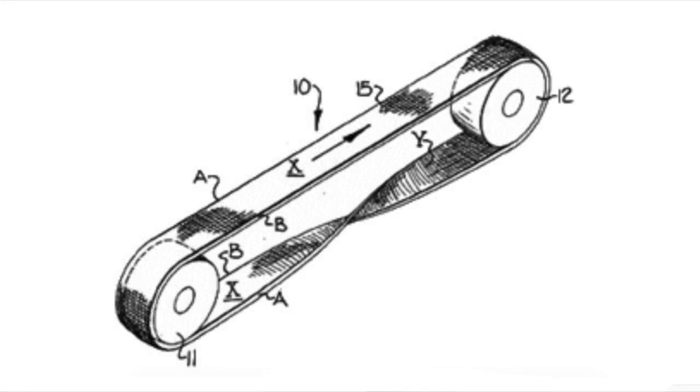Engineers and scientists find the Möbius band fascinating for practical reasons. For instance, conveyor belts designed as a Möbius band distribute wear and tear uniformly, lasting twice as long as conventional conveyor belts.